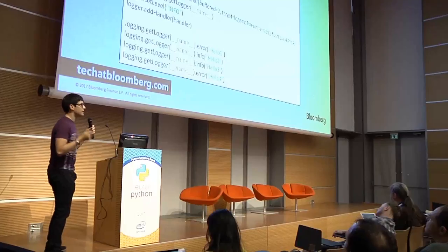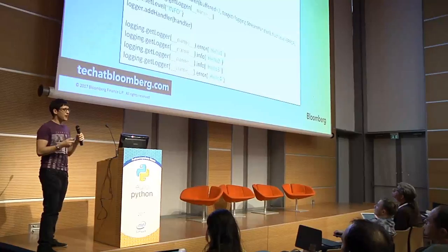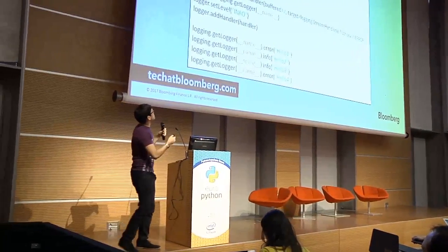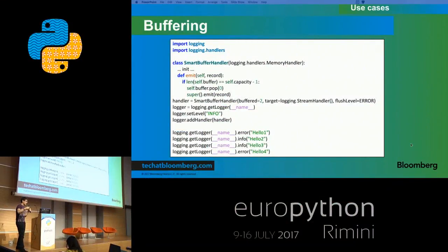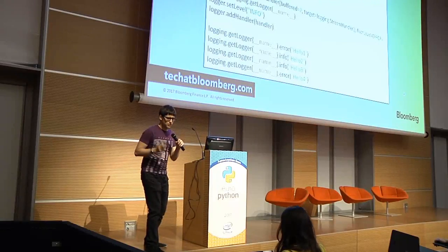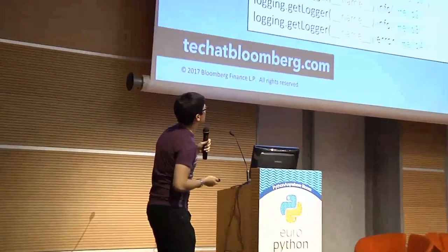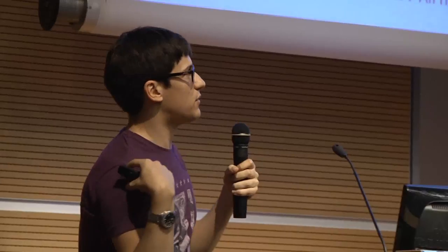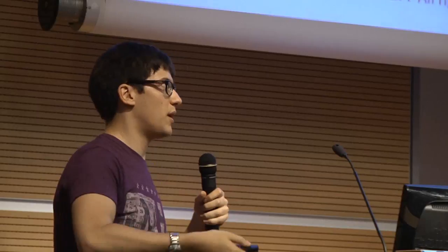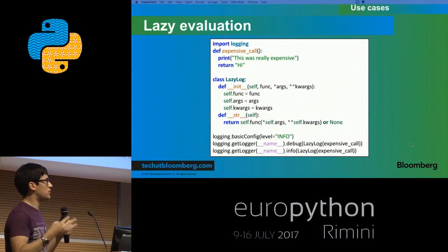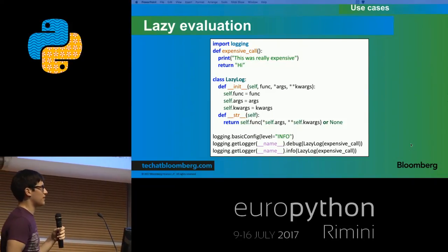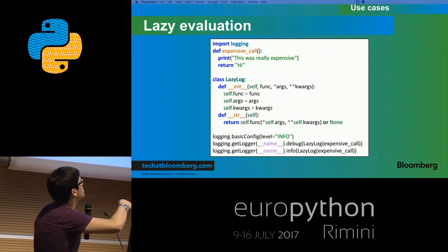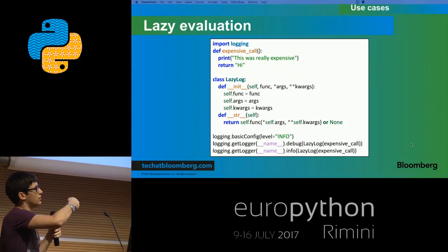Another cool use case: buffering. How many times have you had an error and wished you had changed a debug log to info? There is a smart buffer handler that buffers the previous N logs, and whenever it detects an error it logs not only the error but also those previous buffered entries. For example, whenever there is an error, print the last 20 debug logs. Also, if you want to log the result of a function only in debug mode, you can use a lazy evaluation pattern — create an object that only calls your function when str() is called on it, to avoid the heisenbug of a bug that only appears when you have your debug logs enabled.